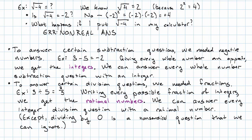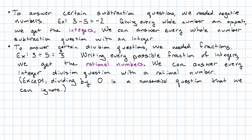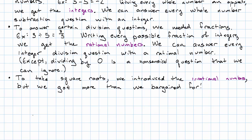So, that's actually a little bit weird. Even at the point of division, things got a little bit weird. At the point of taking square roots, things get super weird. To take certain square roots, we introduced the irrational numbers. But we got more than we bargained for.